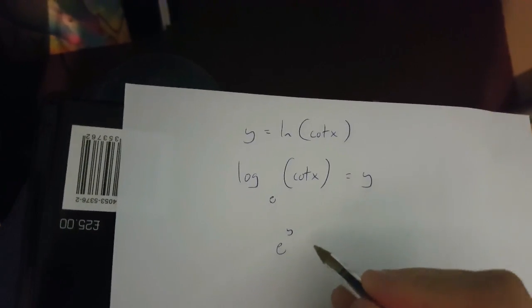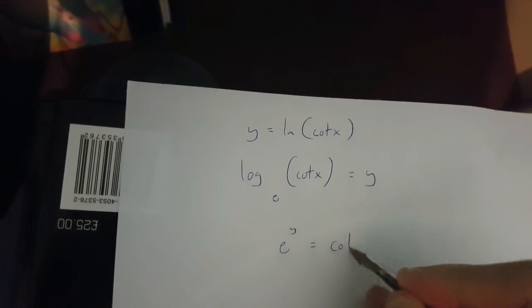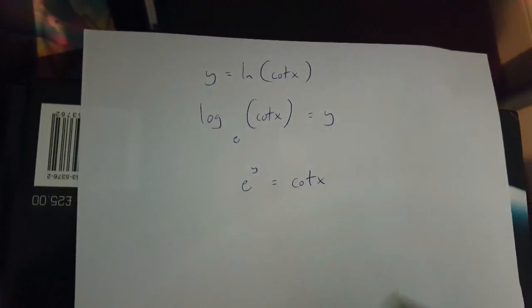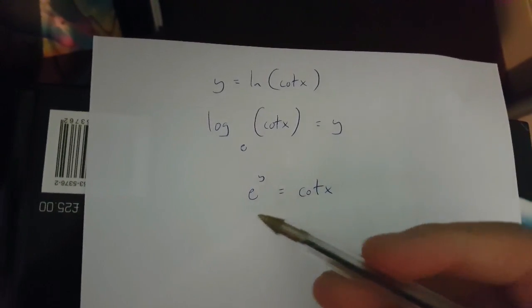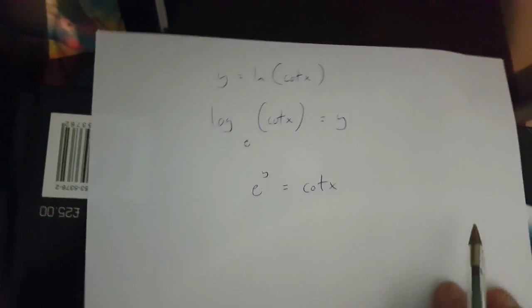then e to the power of y is going to be equal to cotx. Now, from here, I'm going to use implicit differentiation to get dy over dx.